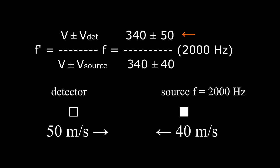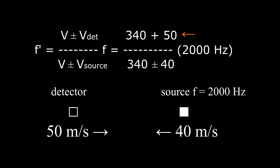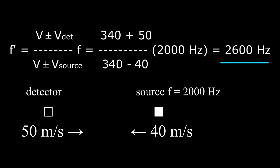First, looking at the numerator, which involves the speed of the detector: the detector is trying to move toward the source and increase the shifted frequency. To make the ratio larger, we choose the plus sign in the numerator. Next, we look at the velocity of the source, which occurs in the denominator. The source is moving toward the other, trying to increase the frequency f prime, so we choose the minus sign in the denominator to make the ratio larger. And the calculation gives 2600 hertz.